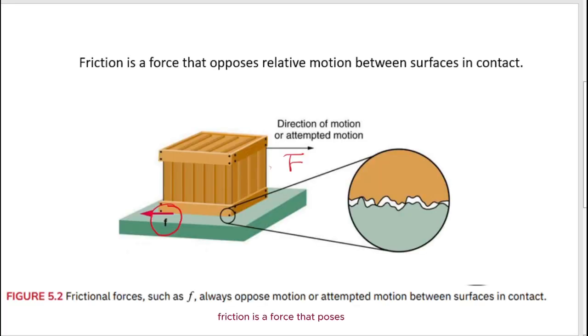Friction is a force that opposes relative motion between surfaces in contact. For example, if this is the direction you apply force, then there will be a force that appears opposite to the direction you apply, and we use small f to describe this.